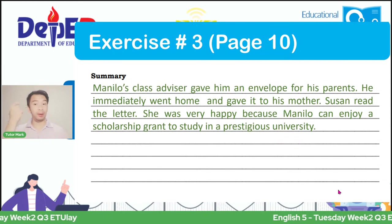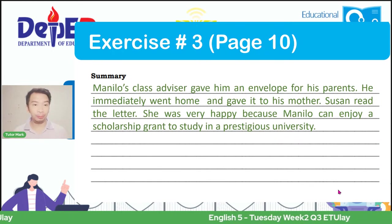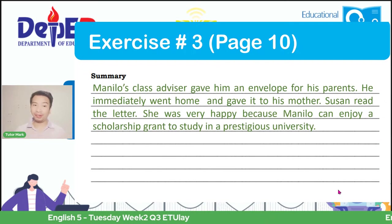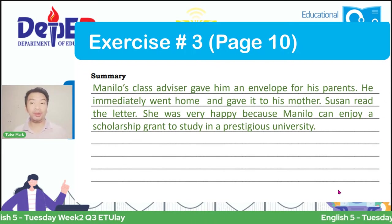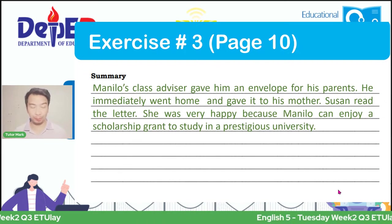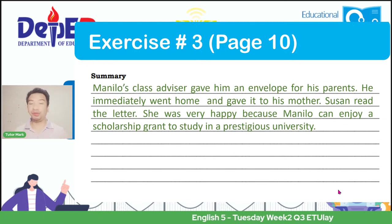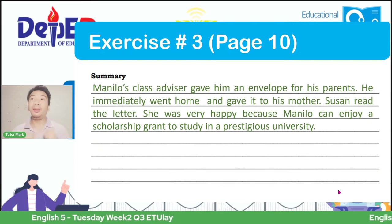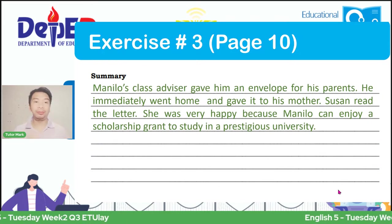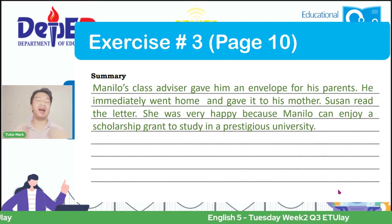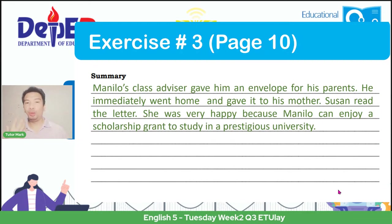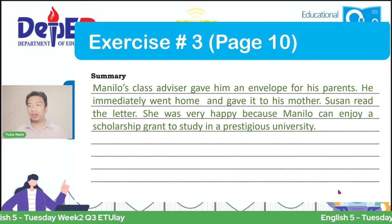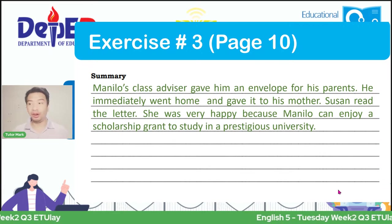In page 10, exercise number 3, you are asked to create a summary. When we say summary, it should be shorter than the original context. And this is a possible answer—listen attentively: 'Manilo's class advisor gave him an envelope for his parents. He immediately went home and gave it to his mother. Susan read the letter. She was very happy because Manilo can enjoy a scholarship grant to study in a prestigious university.' That is the gist of the given text.